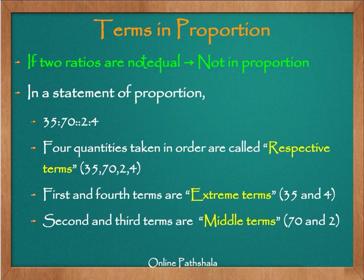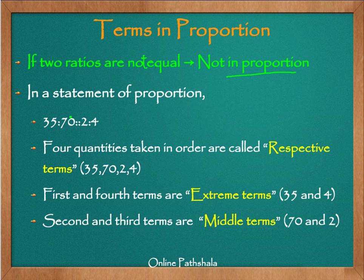Now let us understand the terms used in a proportion. One thing to note: if two ratios are not equal, they are simply not in proportion. Let us look at this statement of proportion: the ratio 35 to 70 is in proportion to the ratio 2 is to 4.